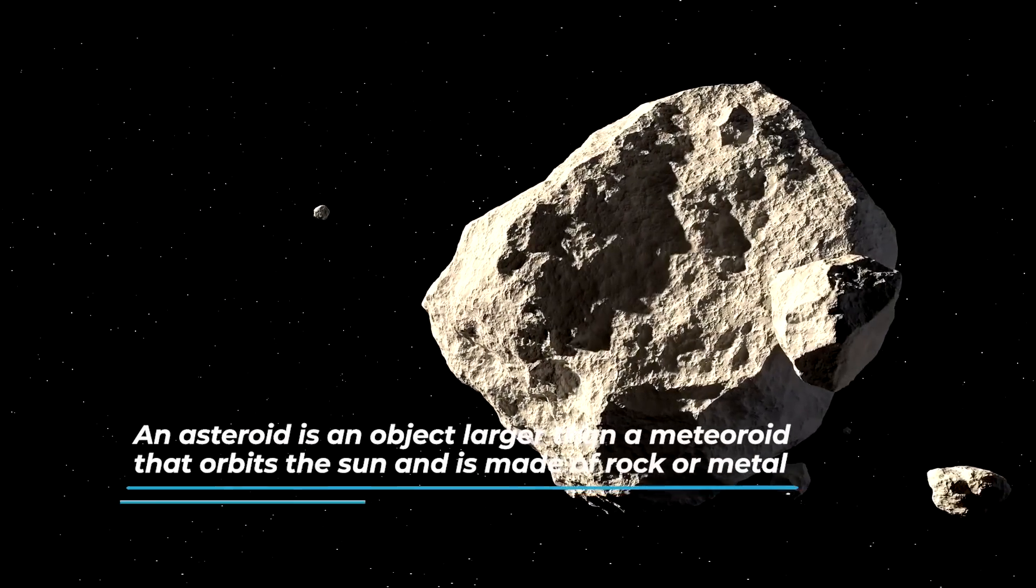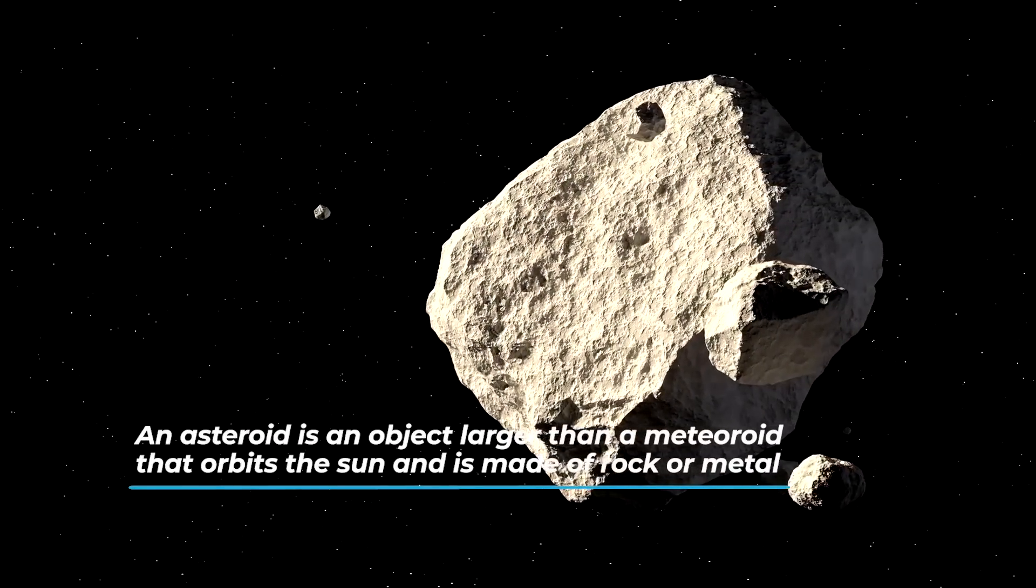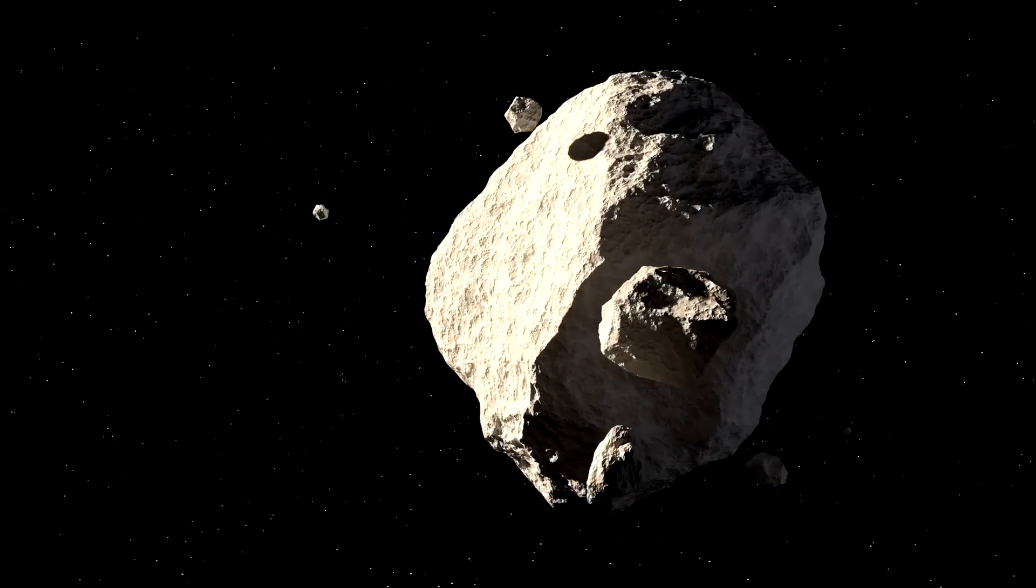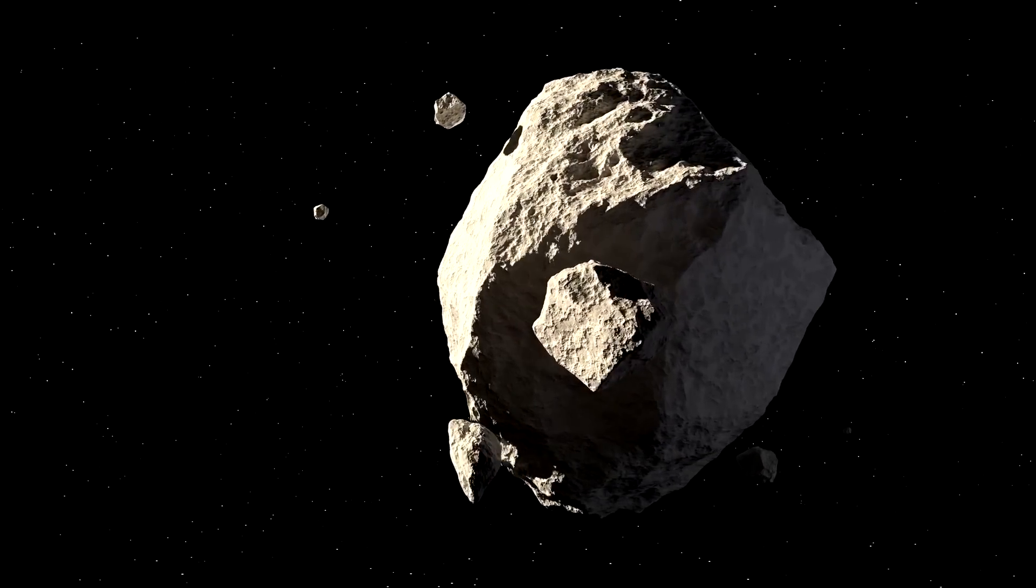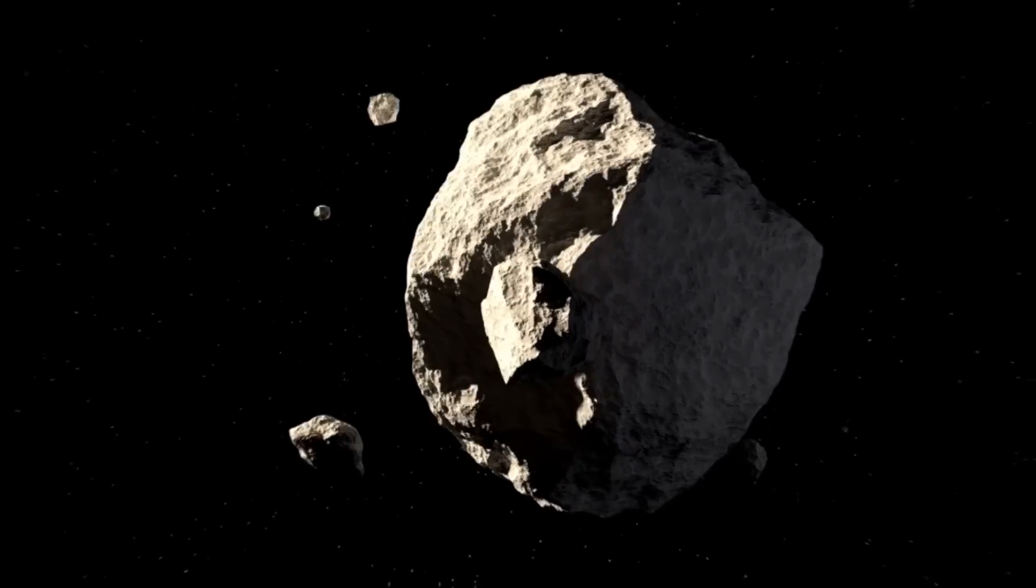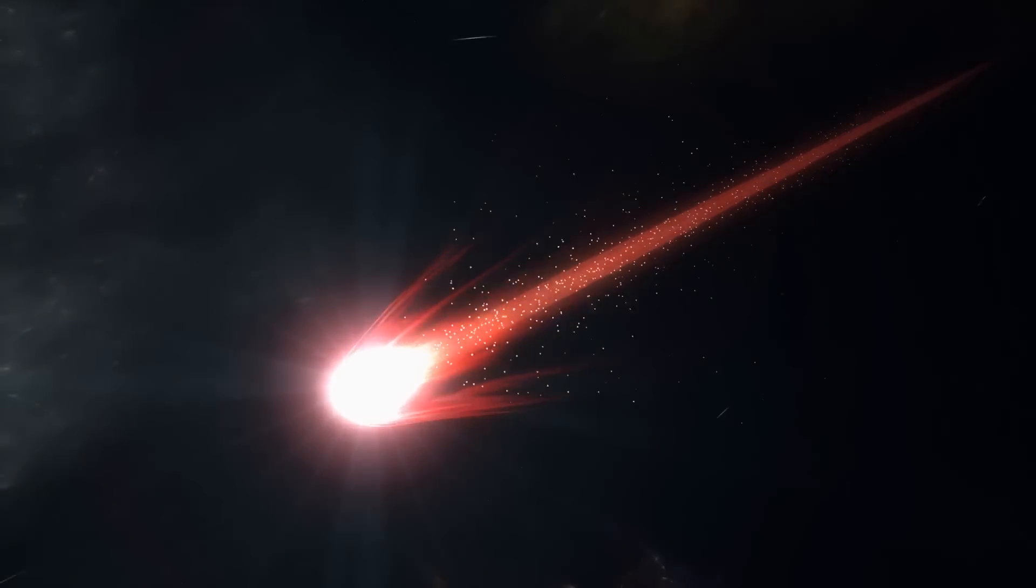An asteroid is an object larger than a meteoroid that orbits the sun and is made of rock or metal. Historically, objects larger than 10 meters have been called asteroids. Now that we understand the differences between all of these objects, let's talk about the news.